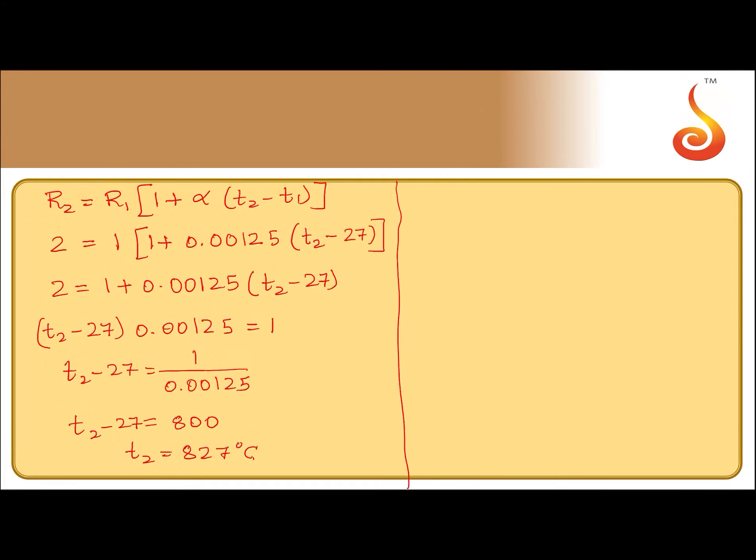So they have given options in Kelvin. So add 273 to this, 827 plus 273 that will make it 1100 Kelvin. This is T2. So that is option B.